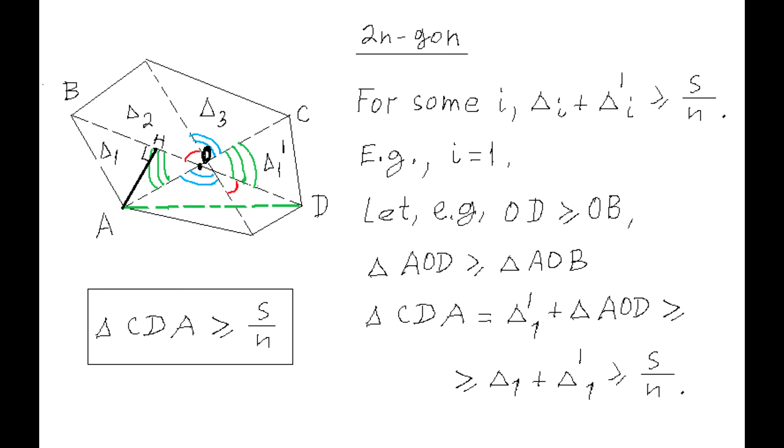Now, triangle CDA is the sum of two triangles, A1' and triangle AOD. From that it follows that the area of triangle CDA is greater than or equal to the sum of two triangles, 1 and 1', and therefore is greater than or equal to S divided by N.